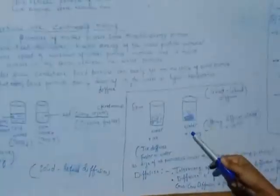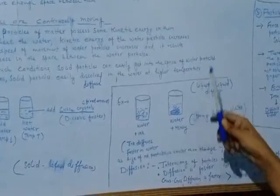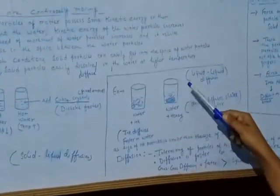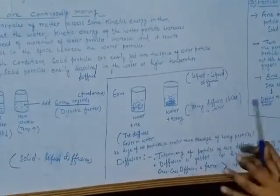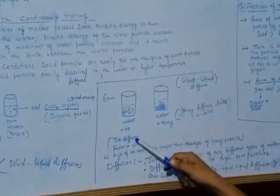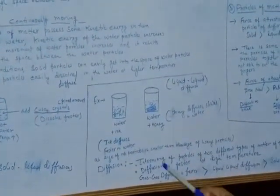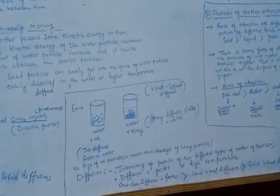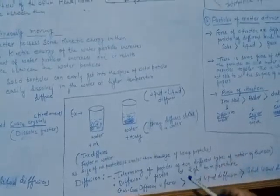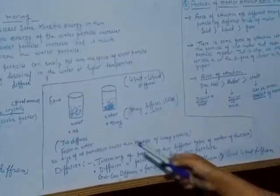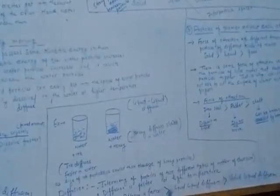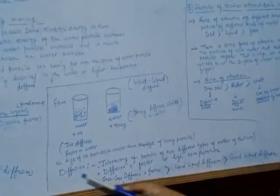We take two beakers with the same amount of water. To one beaker we add ink, and to the other we add honey, keeping both undisturbed. After some time, ink diffuses faster than honey, because the size of ink particles is smaller than honey particles. Diffusion is the intermixing of particles of two different types of matter on their own. Here, water and ink are the two different matters, and their intermixing on their own is called diffusion.